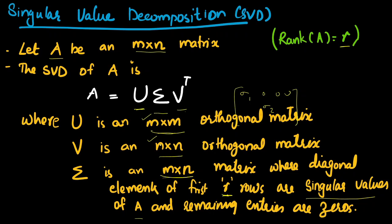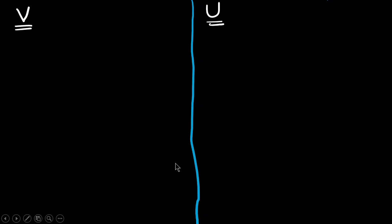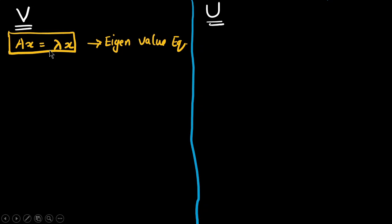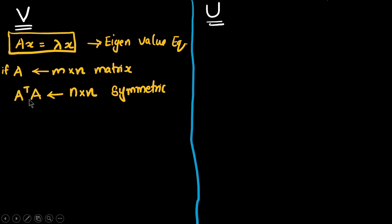So U is m by m, V is n by n, and Σ is m by n. To calculate V, we start with the eigenvalue equation A^T A x = λ x. Here A^T A is an n by n matrix (since A^T is n by m and A is m by n), and it is symmetric.